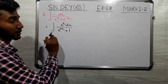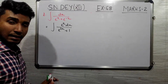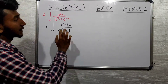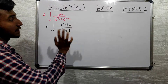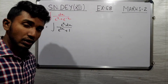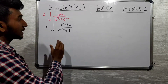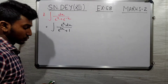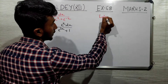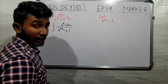Okay, we have to do integration. We substitute here — let e to the power x equal to z. Then e to the power x dx is the derivative, so that becomes dz.